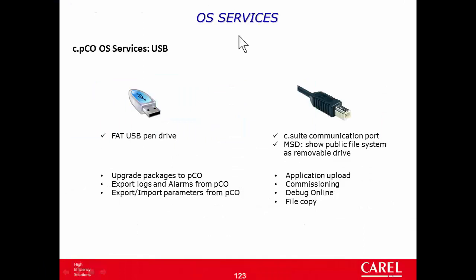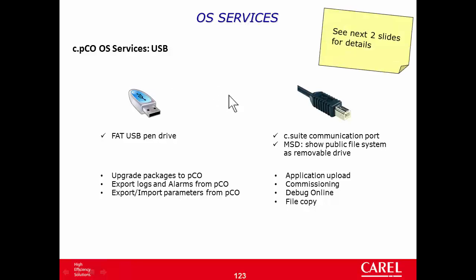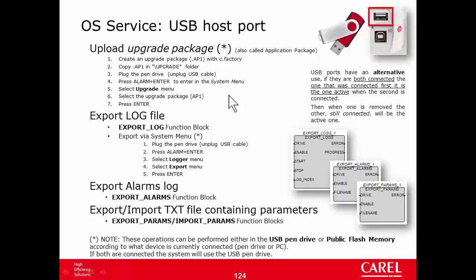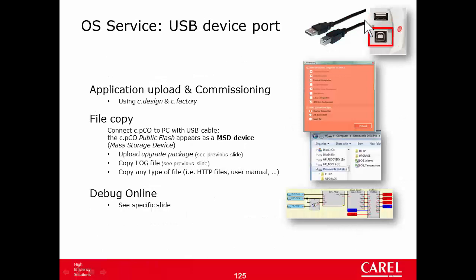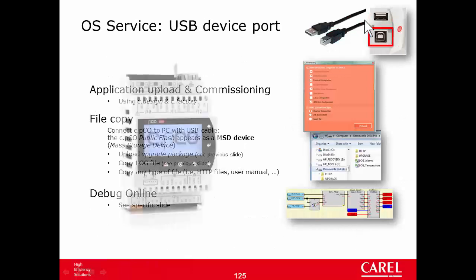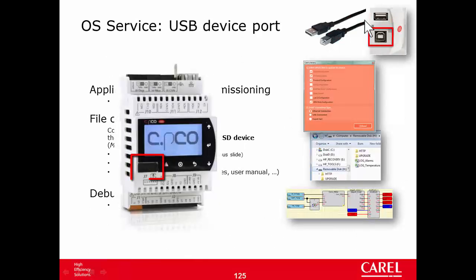Operating system services — USB. CPico has two USB ports: one host and one device. CPico Mini has just one port that behaves as both host and device simultaneously.